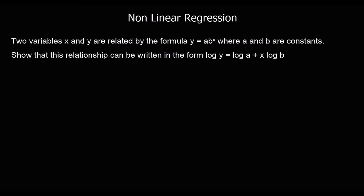Here we've got a question. Two variables, x and y, are related by the formula y equals a times b to the power of x, where a and b are constants. Show that the relationship can be written in the form log y equals log a plus x log b. So we start with y equals a times b to the power of x, and we're just going to log both sides.